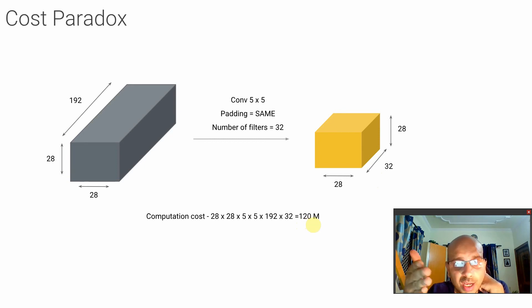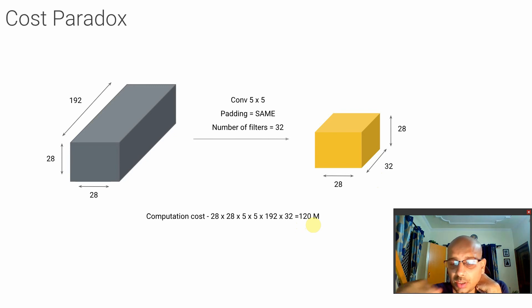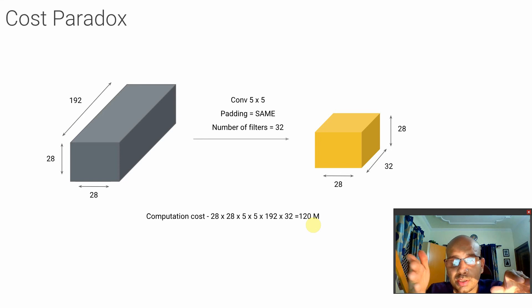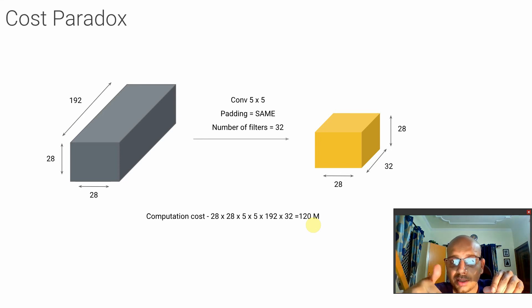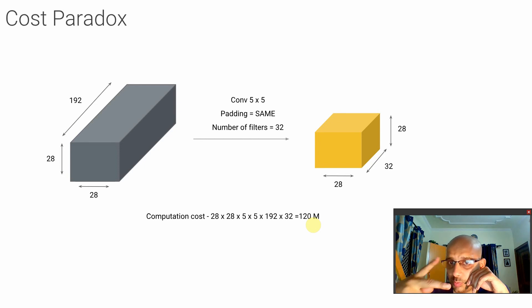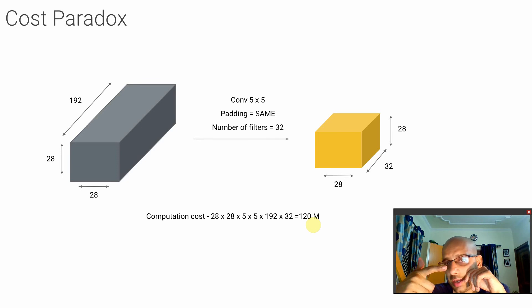Fortunately, there are ways to reduce this cost. One way is instead of doing this whole thing in one step with a 5 by 5 filter and 32 filters, what if we break this into two parts — part one where we do a 1 by 1 convolution, and part two where we do another convolution?